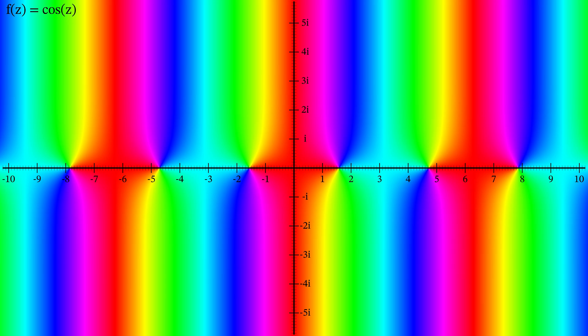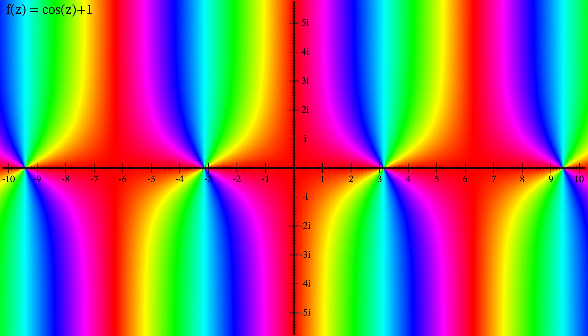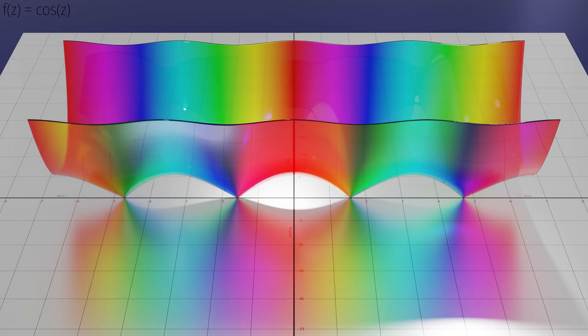Before we finish up this video, let's try adding some simple constants to another function that we are becoming familiar with: the cosine of z. On the 2D phase portrait we can again read the zeros off quite easily, spread at 2π intervals along the real axis. Adding 1 to this function raises it up. Let's try animating this in 3D, watching how the graph changes as we raise it from cos(z) to cos(z) plus 1.